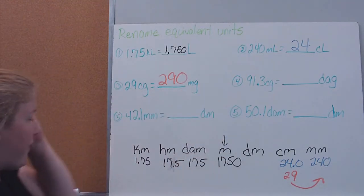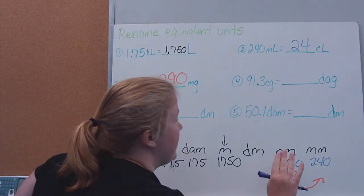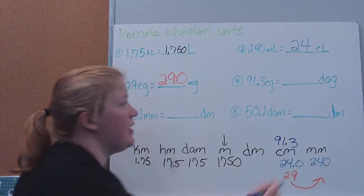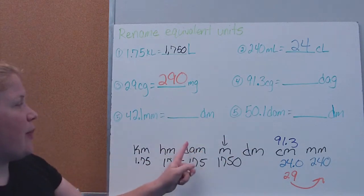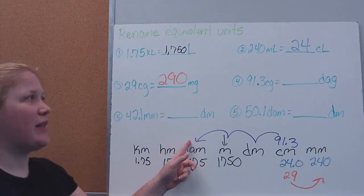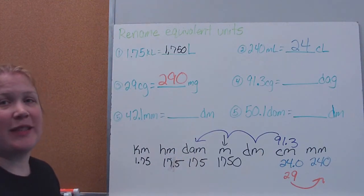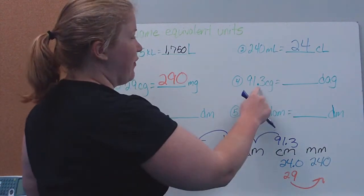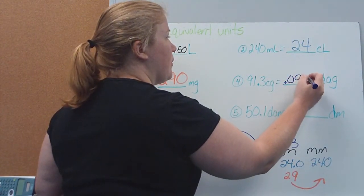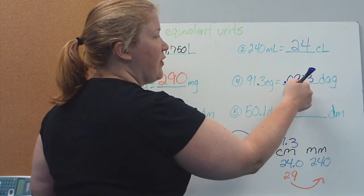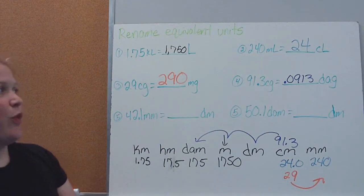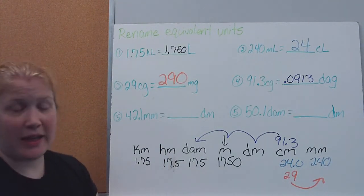Next example: 91.3 centigrams converted to decagrams. I move from centi up to deca: one, two, three spots to the left. So the decimal moves three spots to the left — one, two, and for the third spot I need to add a zero placeholder. I end up with 0.0913 decagrams.